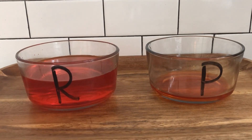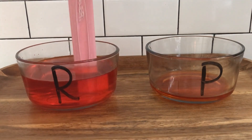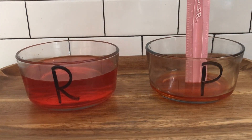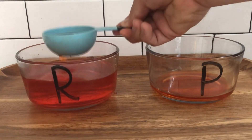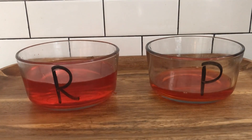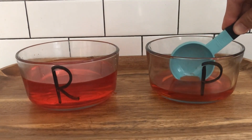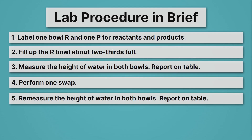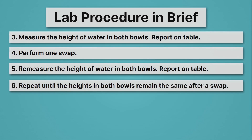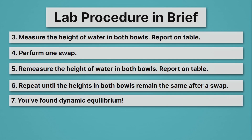After each swap, we'll measure the height of our reactants and products again with the ruler. We should get some number for both — not zero products, but very little on the product side. We're going to continue that process, running reactants forward to products then back again, going back and forth until the height of the bowls doesn't change. That will represent equilibrium. You're going to repeat until the heights in both bowls remain the same after a swap — the reaction is still running forwards and backwards, but the height isn't changing. When that happens, you've found dynamic equilibrium.